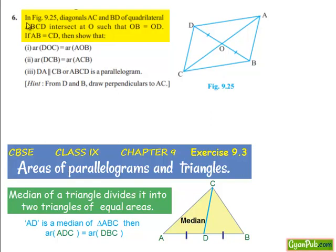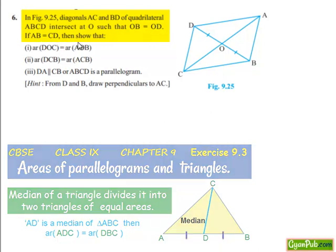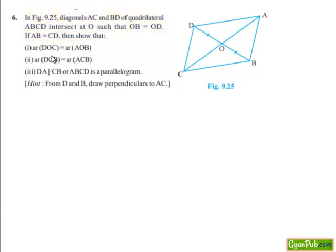Moving on to the sixth question. In figure 9.25, diagonals AC and BD of quadrilateral ABCD intersect at O such that OB is equal to OD. If AB is equal to CD, show that: area of triangle DOC is equal to area of triangle AOB; area of triangle DCB is equal to area of triangle ACB; and DA is parallel to CB, or ABCD is a parallelogram.